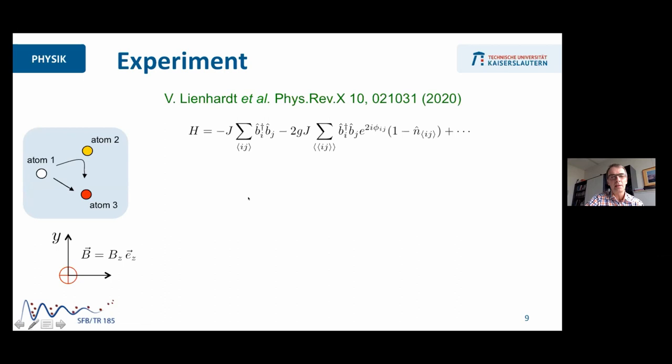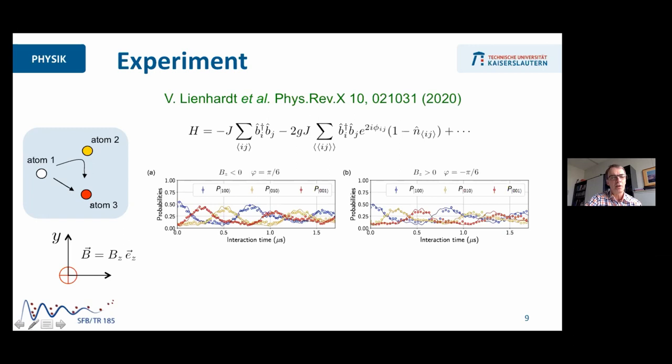Even more importantly, this process via atom two can obviously only happen if atom two is in the lower state. If it's in the other spin state, then this process is forbidden. As a consequence, we have a nonlinear hopping process with a phase which can only happen if the intermediate spin is in a particular state. This actually has been observed in a very nice way in an experiment in Antoine Brauvers' group. For atoms on such a triangle, the Hamiltonian is adjusted as a direct coupling and the mediated indirect coupling depending on the population of the intermediate state. And this has a Peierls phase.